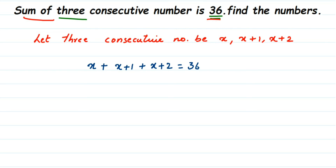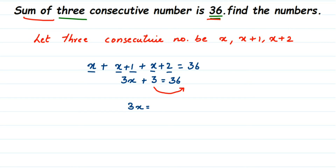Now we have an equation and we need to find x. Adding all the variables: x plus x plus x gives three x. Adding the constants: one plus two is three, so three x plus three equals 36. Now we transpose three to the other side of the equation, giving three x equals 36 minus three, which is 33.